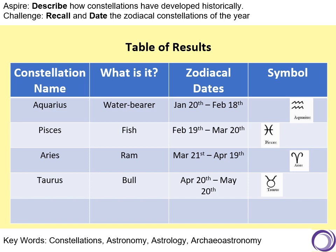So what do we have so far? We've done four constellations: Aquarius the water bearer, Pisces the fish, Aries the ram, and Taurus the bull. We've got the zodiacal dates. I'll allow you to pause the video at this point if you want to collect those dates and the symbols. Otherwise, we shall continue.